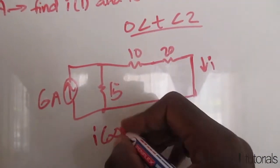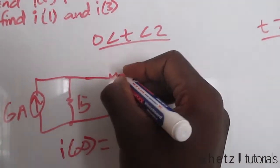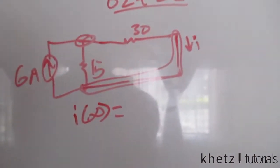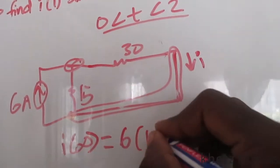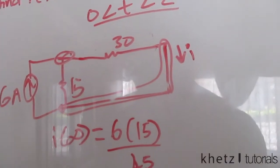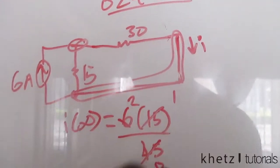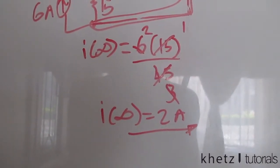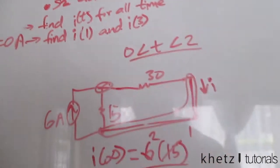To find i∞, we combine the 10 Ω and 20 Ω in series to get 30 Ω, which is in parallel with 15 Ω. Using current division: i∞ = 6 × 15 / (15 + 30) = 6 × 15 / 45 = 90/45 = 2 A. So i∞ = 2 A for this interval.